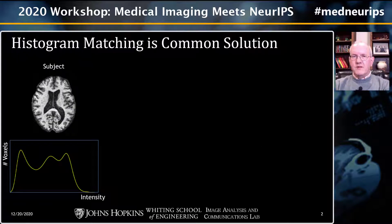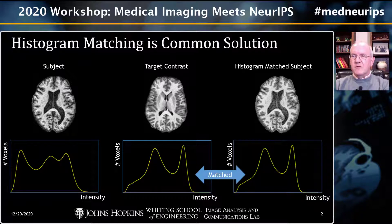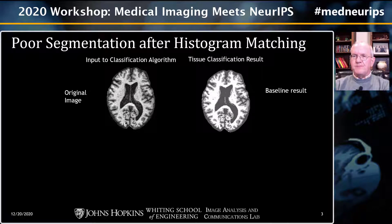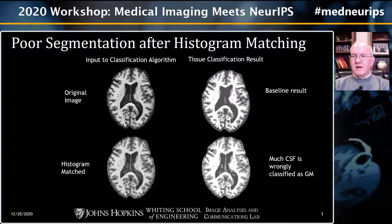A common solution to this problem is histogram matching. If we have a subject with a certain histogram, but our algorithm has been developed for a target contrast with a different histogram, it's certainly possible to match the histogram and modify the subject image so that it has the same histogram as the target. If you have an original image and process it this way, you get one result. If you harmonize it with histogram matching, you get a different result, and in this case things have gotten worse. There's a lot of CSF that has been classified incorrectly as gray matter.